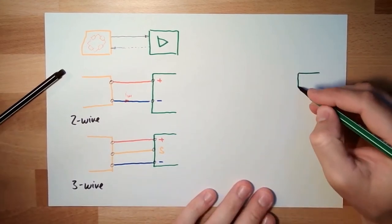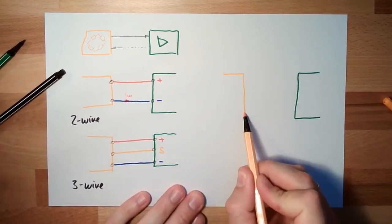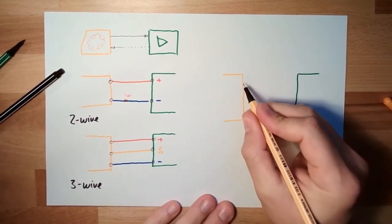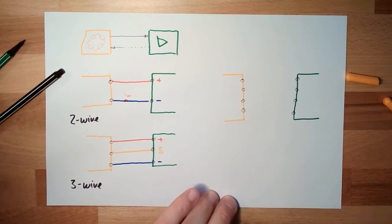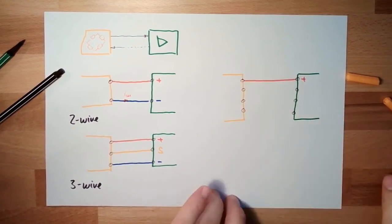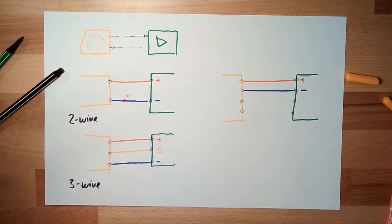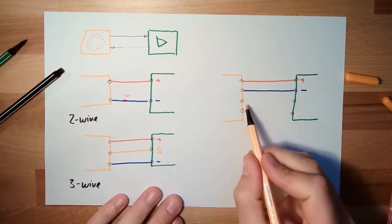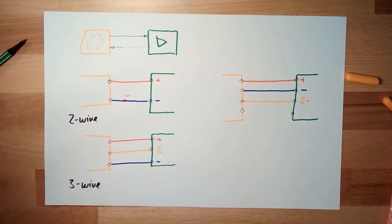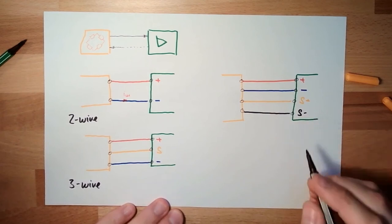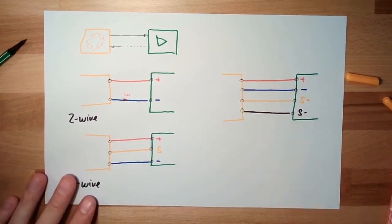And then, the full part. Sensor and amplifier. This time, we do have one, two, three, four cables in between. Of course, we do have a power supply, plus and minus. Plus and minus. And then, we do have a signal. We have a signal plus. And we do have a reference for our signal. So now, the ground for the signal and the power supply are different.